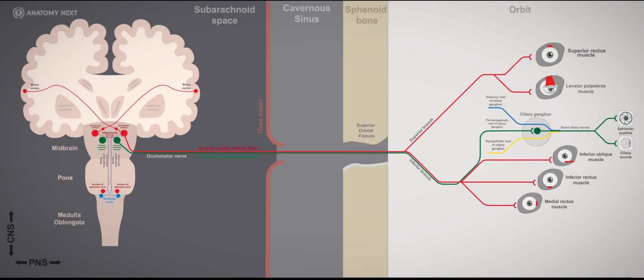The oculomotor is the third cranial nerve. It is a mixed nerve containing motor fibers, that is, general somatic efferent fibers, and preganglionic parasympathetic fibers, namely general visceral efferent fibers.